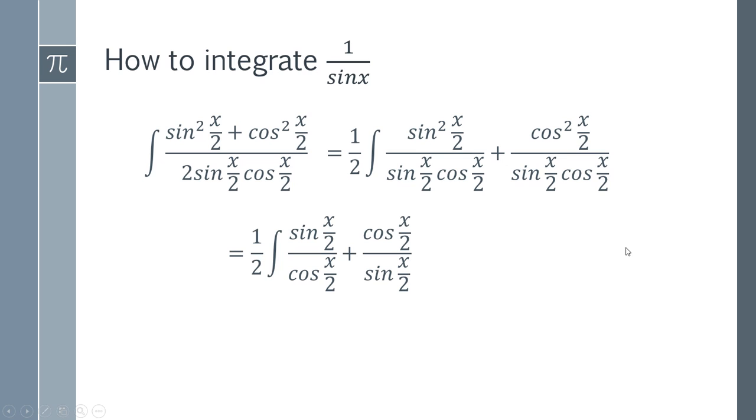So we can also remember some of our identities. This is sine over cosine, so that's going to give us a tangent. And this here is cosine over sine, so this is going to give us 1 over tangent, which is our cotangent.